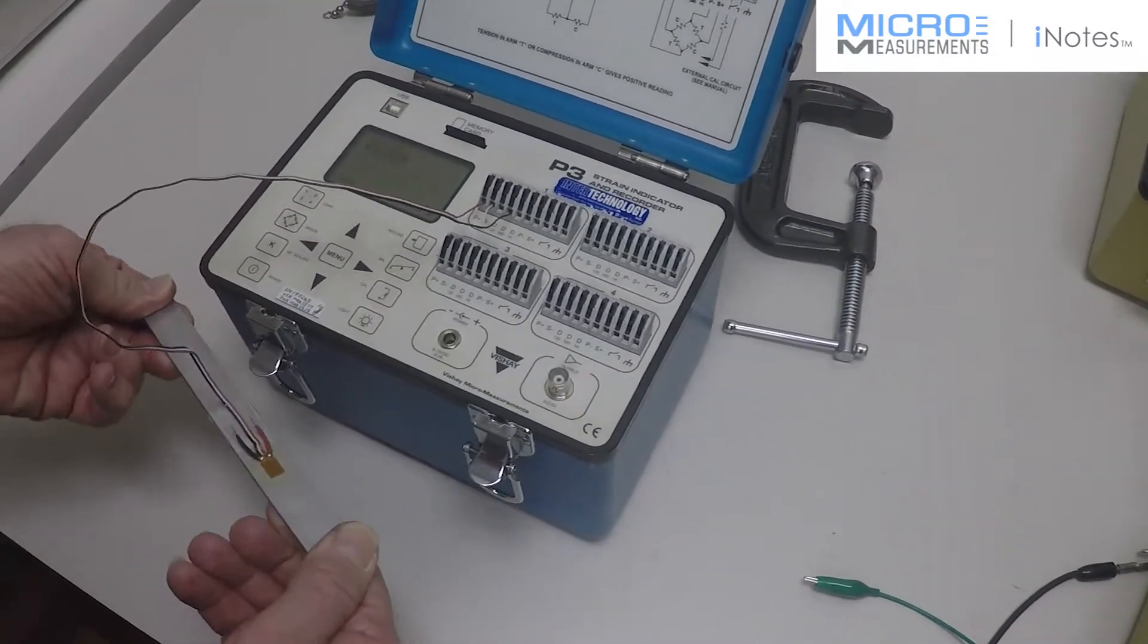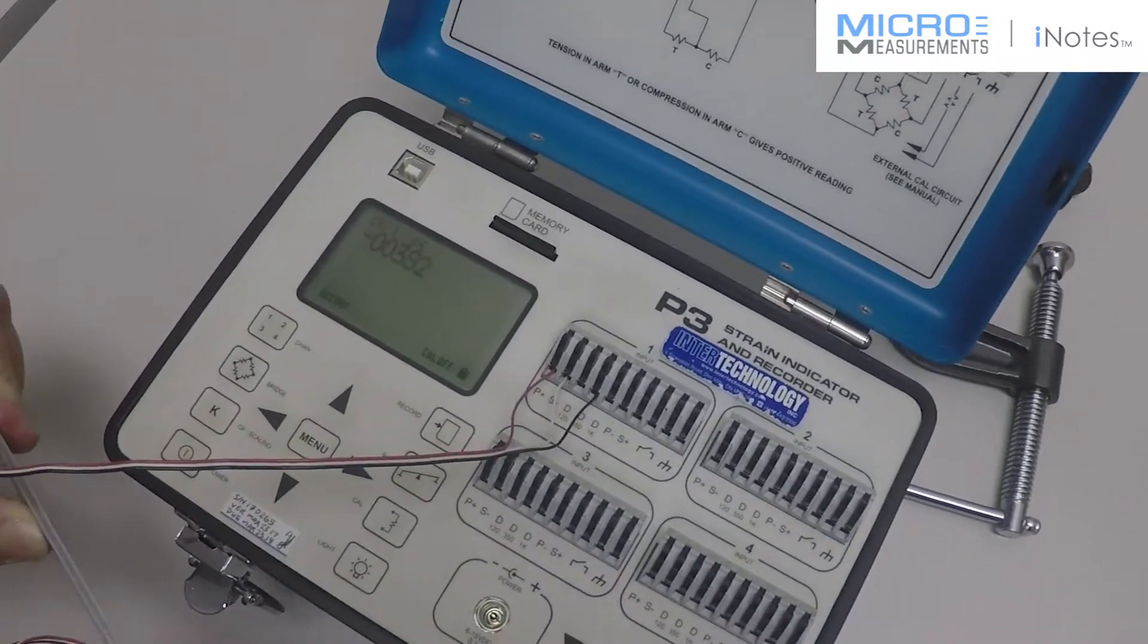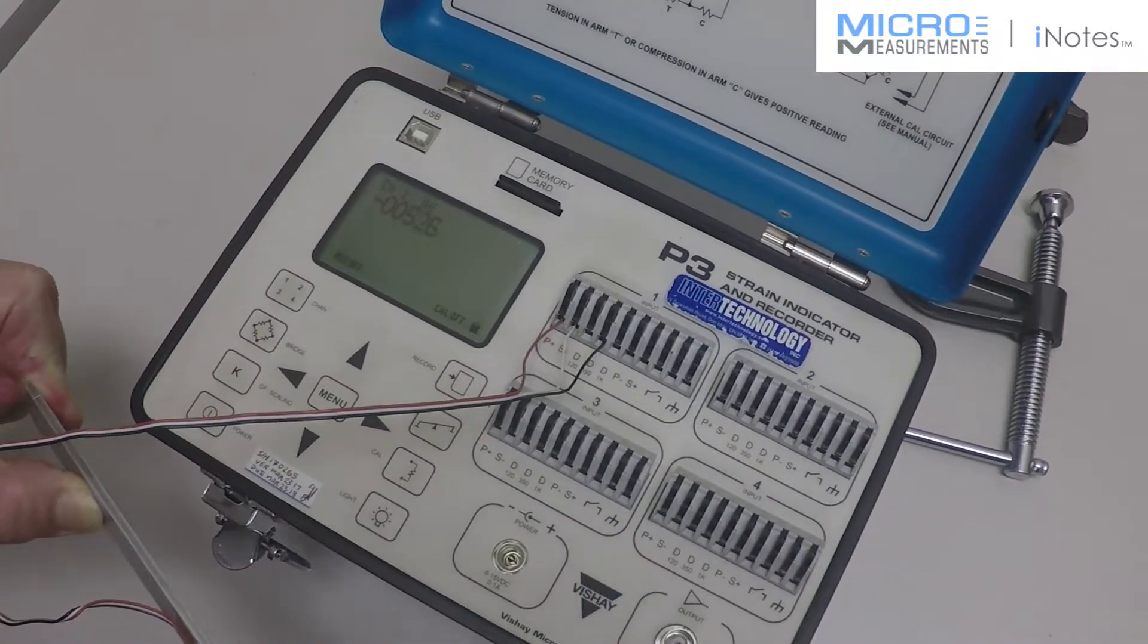If I apply tension on my strain I can increase. If I apply compression on this strain gauge I'm going to get a negative reading.